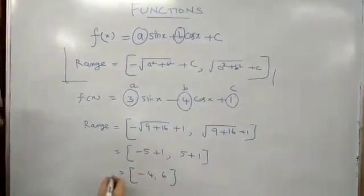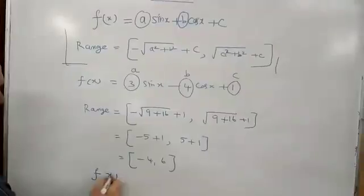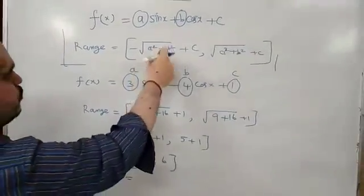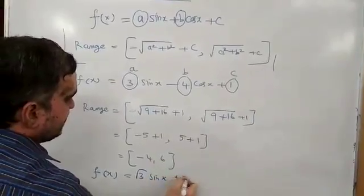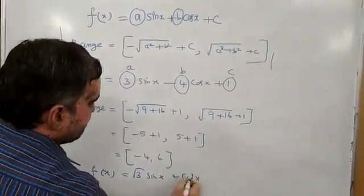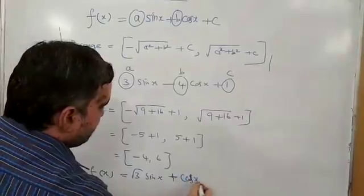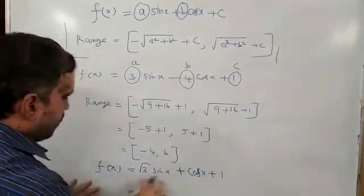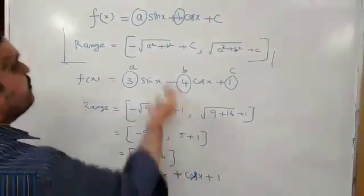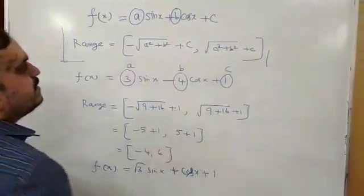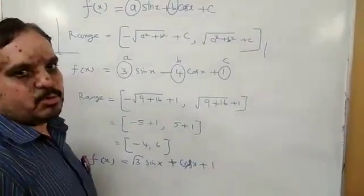By using the formula, you can try another question. I'm just giving a question for you. You may try using this formula: 3√3 sin x + cos x + 1. Find out the range by using this formula. You can easily get the answer. Thank you.